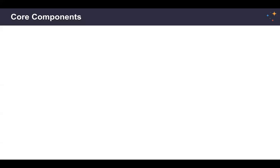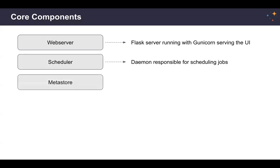Starting with the core infrastructure components — you don't need to know too much about these in depth when writing data pipelines, but they're useful to understand because any time you run Airflow, even locally, these are the components that get spun up. The three main components are: the web server, which serves your UI; the scheduler, the daemon responsible for scheduling your jobs; and the metastore, your backend database where all metadata are stored — typically Postgres, though there are a couple of options.